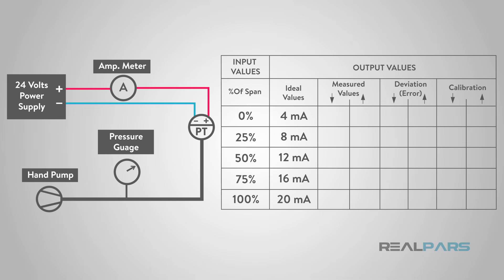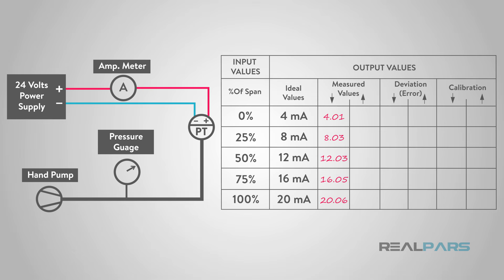To perform an as-found check, an accurate and precise instrument is used to develop process signals corresponding to 0%, 25%, 50%, 75%, and 100% of the process range of the transmitter. The corresponding transmitter output in milliamps is observed and recorded. This is called a 5-point check. Then, in order to check for hysteresis — a phenomenon whereby the sensor output for a process value is different going downscale as it is going upscale — the output signals corresponding to 100%, 75%, 50%, 25%, and 0% in order are recorded.